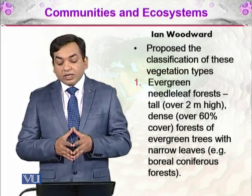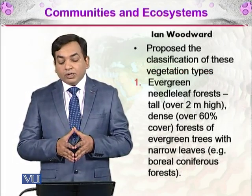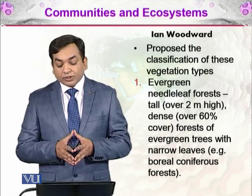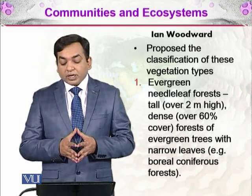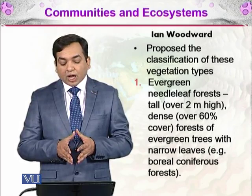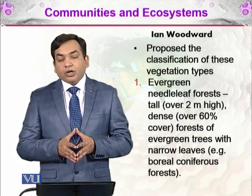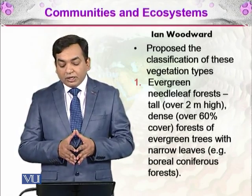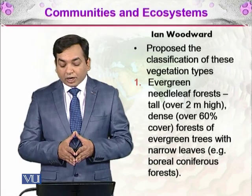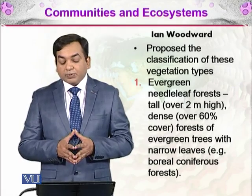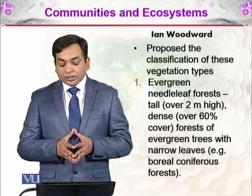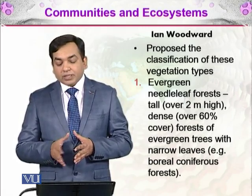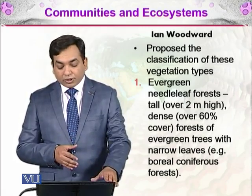Ian Woodward at the University of Sheffield in the UK proposed a classification of vegetation types. He defined evergreen needle leaf forests as tall — over 2 meters high — dense, with over 60% cover, composed of evergreens with narrow leaves. An example of this is the boreal coniferous forests.